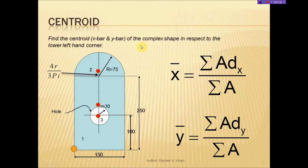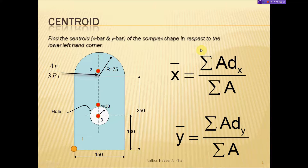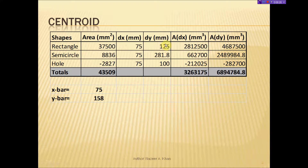Going back, we see that in the x direction all the centroids of the simple shapes line up and they all have the value of 75 — that is symmetry in the x direction, which is why all those dx values are the same. We take the area of the rectangle times the x-bar of the rectangle to get the A·dx value. For the y direction, the dy for the rectangle is 250 divided by 2, which gives 125.